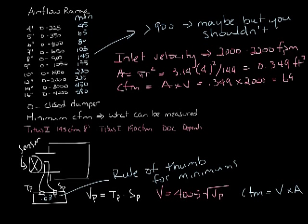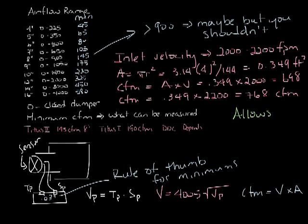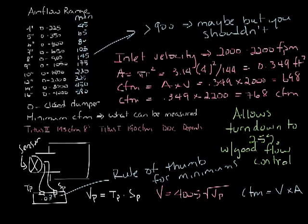From there you can calculate the CFM at 2,000 feet per minute as being 0.349 times 2,000, or 698 CFM. Or at 2,200 feet per minute, which comes out to 768 CFM. And if you select your inlet size so that you're near the 2,000 feet per minute range, you'll also be able to turn your box down to about 25% airflow, or 500 feet per minute, and still be able to maintain proper flow control.